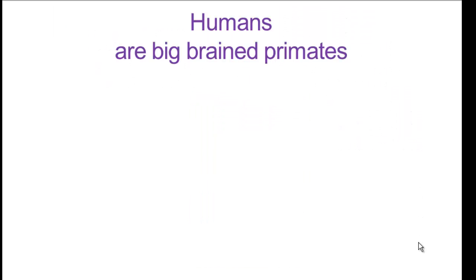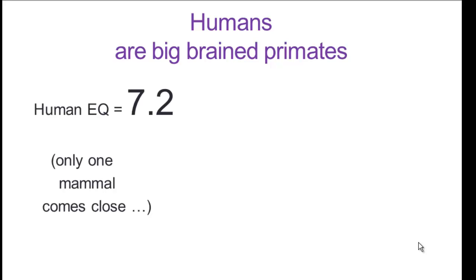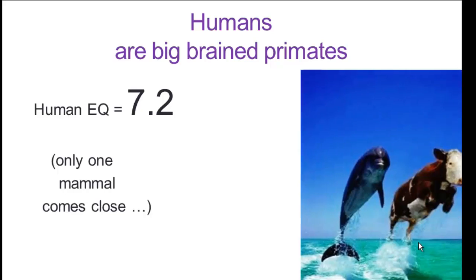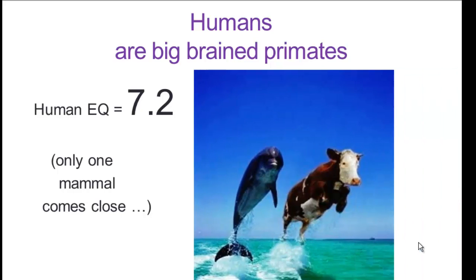So humans, it turns out, are big brain primates. Primates are big brain mammals and humans are big brain primates. Our EQ is 7.2. And you'll find in the literature EQs for humans from 7 to 9, basically. And only one other mammal comes close to us in that EQ. And it's not the heifer cow.